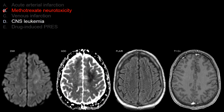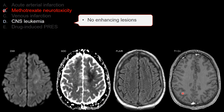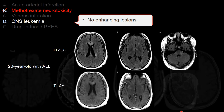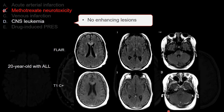For CNS leukemia infiltrate, you are looking for enhancement or enhancing lesions. They could be multifocal or can present like a chloroma — a single dominant mass lesion. Here is an example of a 20-year-old with ALL presenting with CNS leukemia infiltrate. Notice multiple signal abnormalities on FLAIR with random, unpredictable location, often accompanied by enhancing lesions on post-contrast T1. It would be unusual for our case — with no enhancement — to be CNS leukemia infiltrate or a chloroma.